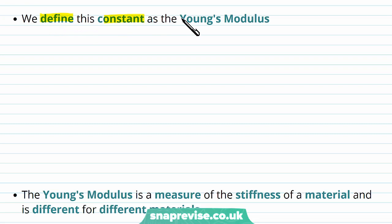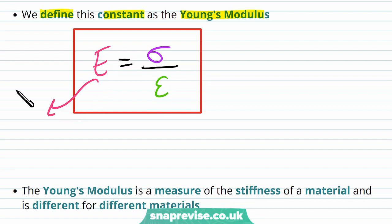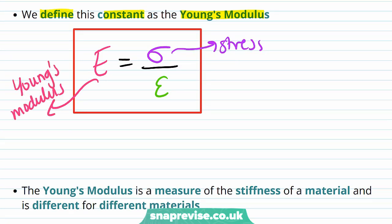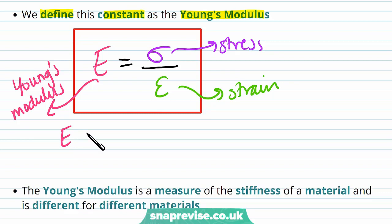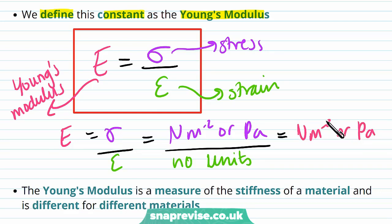This constant gradient in the linear region is defined as the Young's modulus. The Young's modulus of a material E is equal to stress sigma divided by strain epsilon. We can work out the units by considering that stress has units of newtons per metre squared or pascals, and strain has no units because it is a ratio. Therefore the units of Young's modulus are also newtons per metre squared or pascals — the same units as stress.